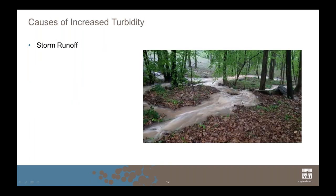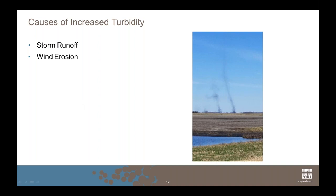There are several methods of particulate introduction into a system. First, storm runoff: as rainfall is released over an area, particulate matter is picked up from varying sources. In urban environments this may include pollutants, dust, or pet waste; in rural environments, loose soil and leaves. As rainfall enters a water body, velocity increases and can erode river banks. Wind erosion is another source — areas like the midwest may experience dust devils or tornadoes displacing soil, which eventually lands in water bodies.